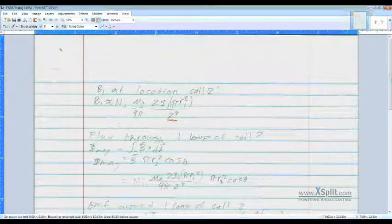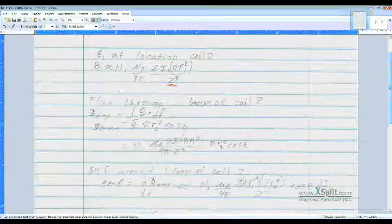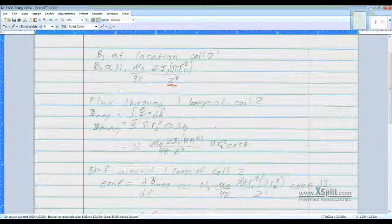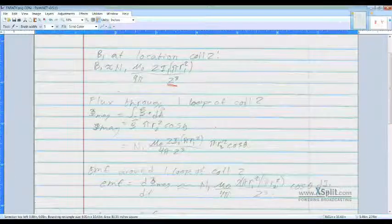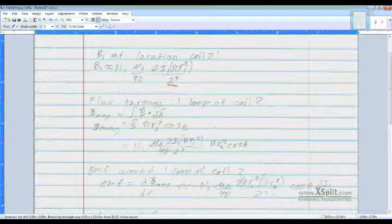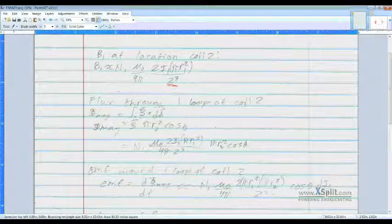And we use that because Z is greater than, much greater than, the radius of the coils. So now we have that, we need to find the flux through one loop of coil 2. So magnetic flux is equal to the integral of B dot dA.